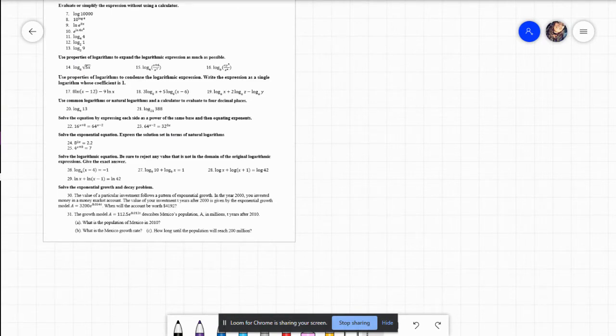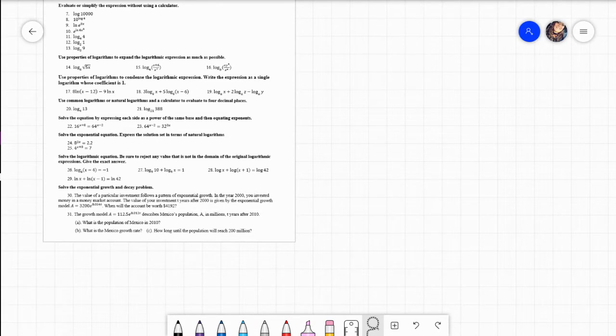The directions say to solve the logarithmic equation, be sure to reject any value that is not in the domain of the original logarithmic expression, and to give the exact answer. So that second sentence is basically just saying if you find a value for x and it causes you to take the log of a negative number, well we know we can't do that, so that value would be rejected. Most like x equals a negative number will automatically be rejected as well. It really just depends on what the actual equation is.